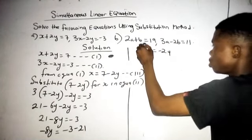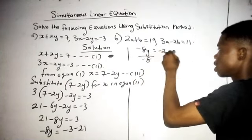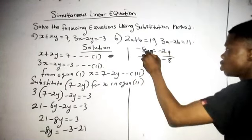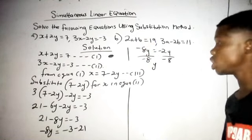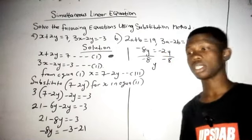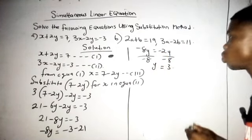Now for y to stand alone, I will divide both sides by minus 8. Minus 8 will cancel out minus 8, leaving with just y. Then minus 8 will divide minus 24. Take note that we have minus and minus sign right here, so this is going to be positive 3. Now we have got y as 3.